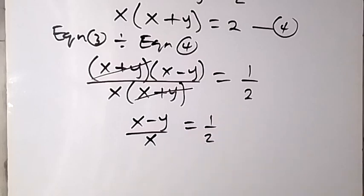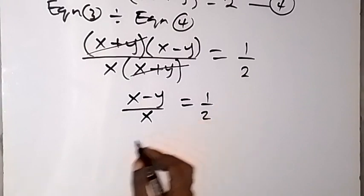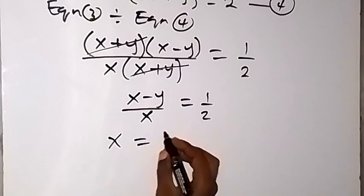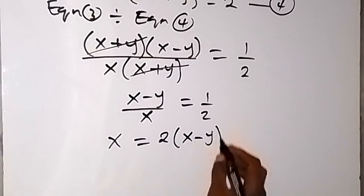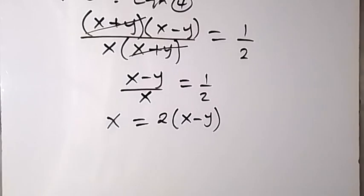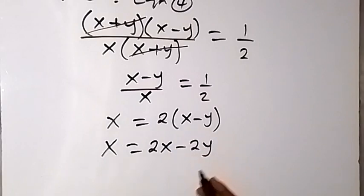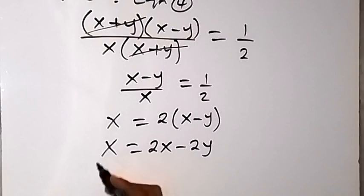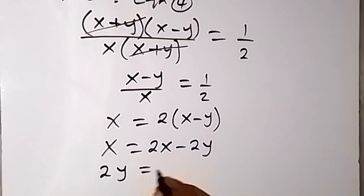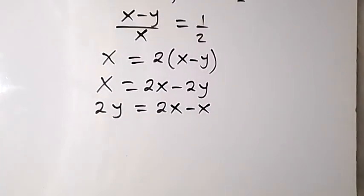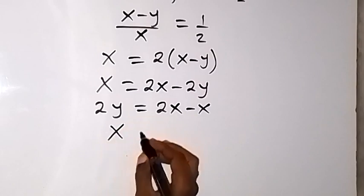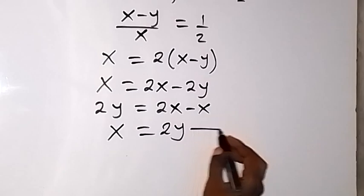From here, we can cross multiply. This gives us x equals to 2 multiplied by x minus y. Opening the bracket, it becomes x equals to 2x minus 2y. Bringing the terms together, 2y equals to 2x minus x, which gives us 2y equals to x. So we can write x equals to 2y. Let's call this equation 5.